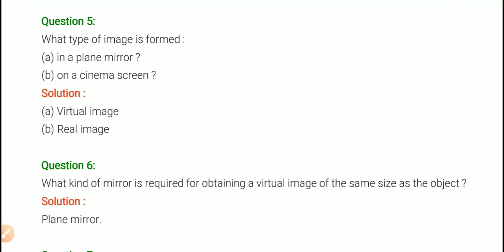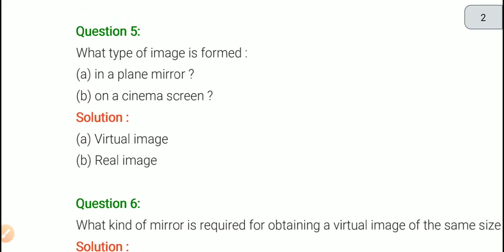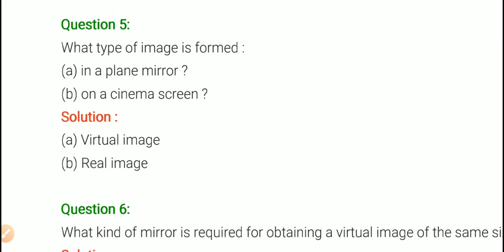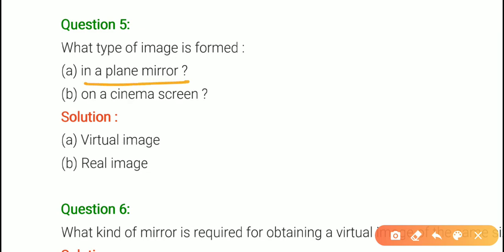Question number 5: What type of image is formed in a plane mirror? The plane mirror always forms a virtual image. A cinema screen forms a real image. This is an important point to remember.